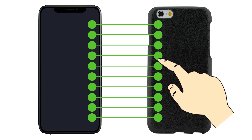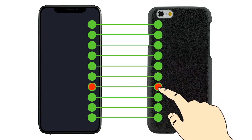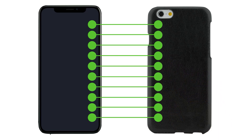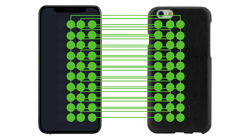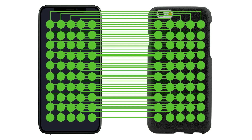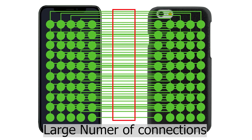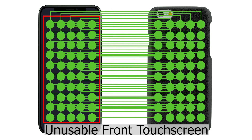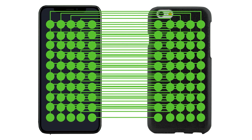The user can also swipe on the back to generate a one-dimensional swiping gesture on the front. However, this design is limited to 1D. One may extend this idea and attach a 2D array of electrodes on the front and back sides, yet this would require an exceedingly large number of connection traces and render the front screen nearly useless. Instead, we propose Backtrack, which enables fine-grained 2D finger tracking on the back of the device.